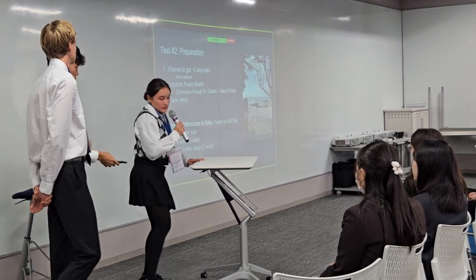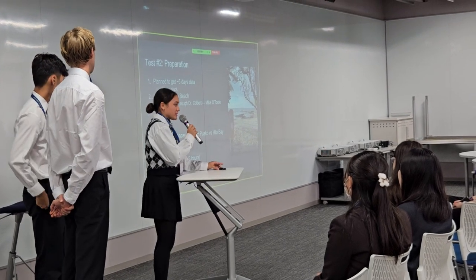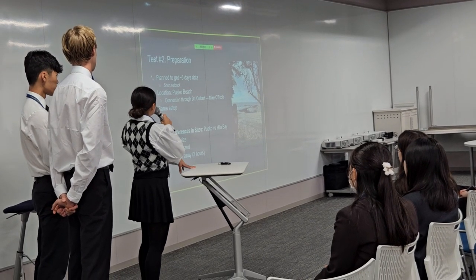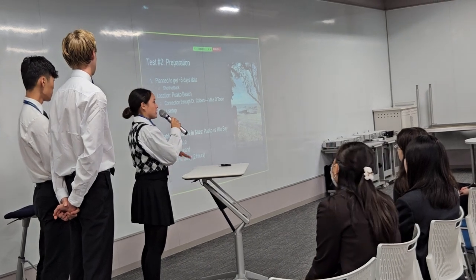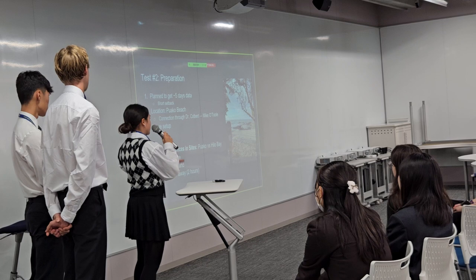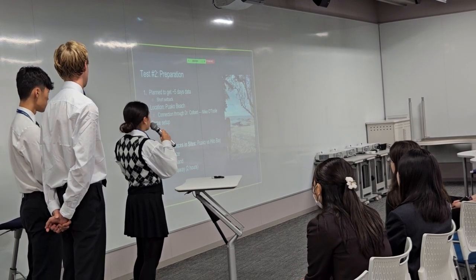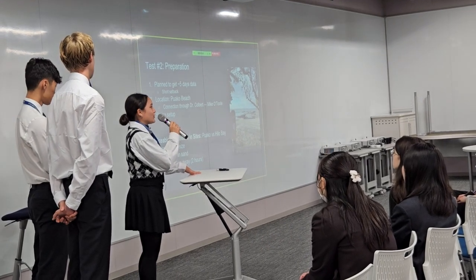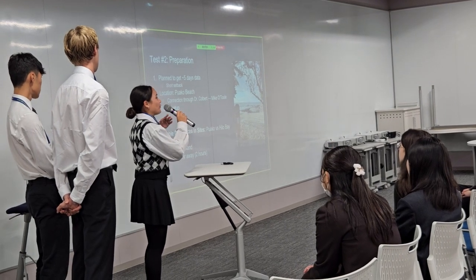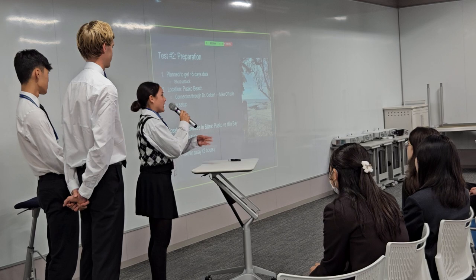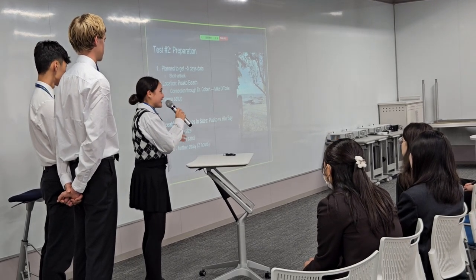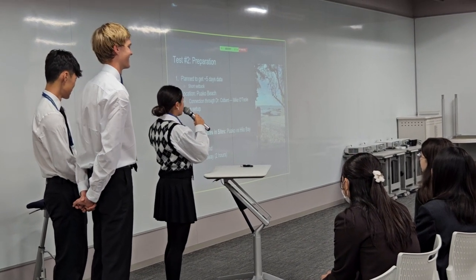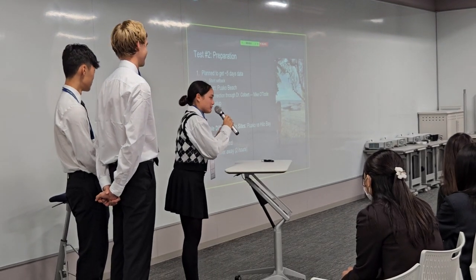With our previous results and conclusions drawn from the first test, in this second test we decided to collect around five days of data so that we had more information. Our location was across the island at a beach called Puako Beach, accessed through our advisor's connection with someone he had worked with in the past. This gave us access to a more private, secluded beach, because the first time around we had to stay at our hometown beach in Hilo and watch the loggers throughout the day since people kept walking across the beach. We assumed this new area would be less populated.